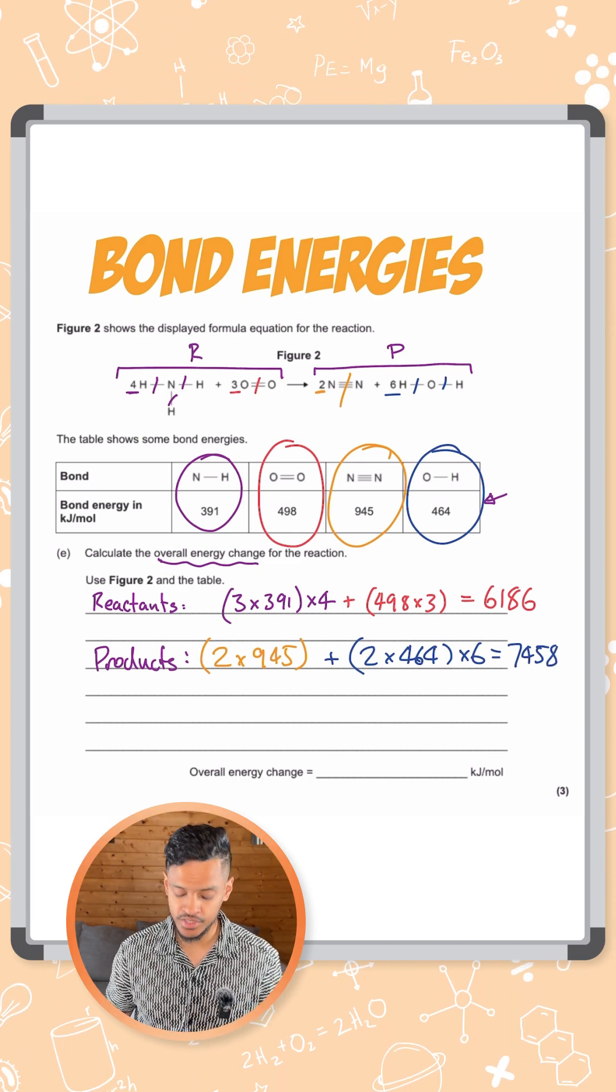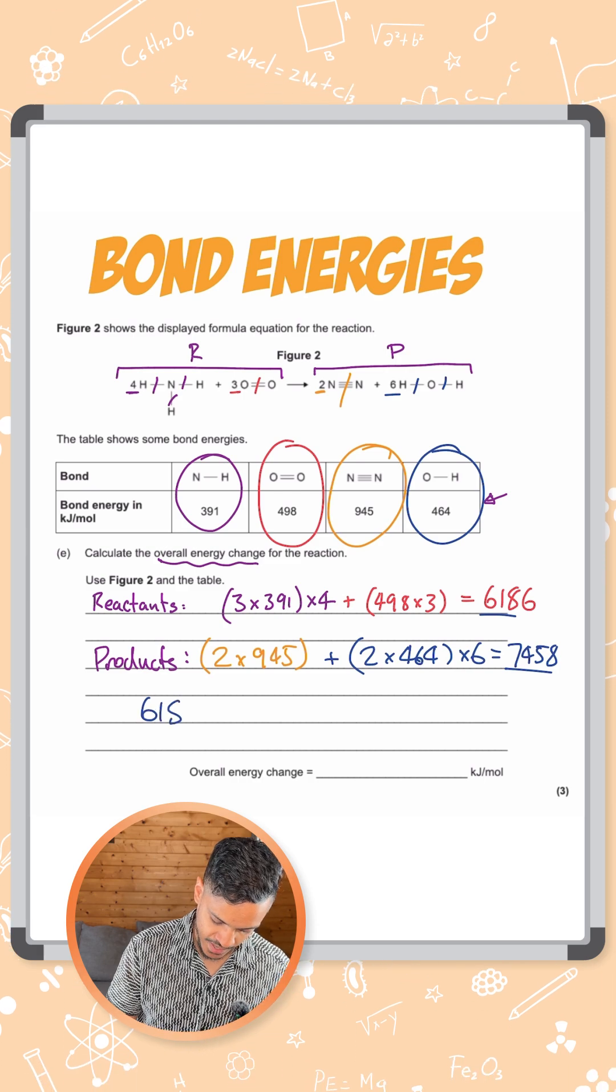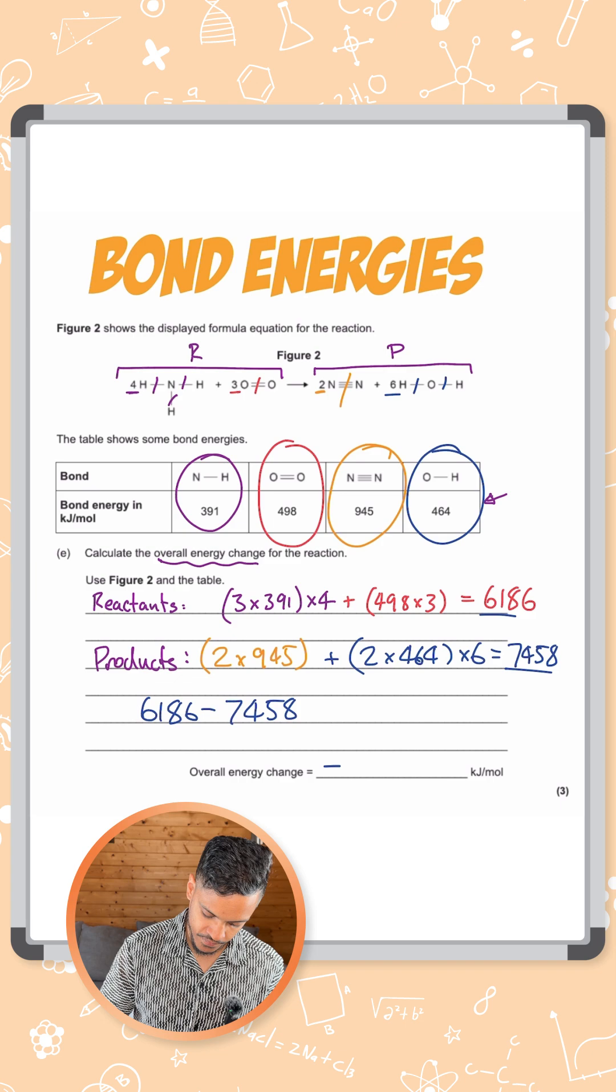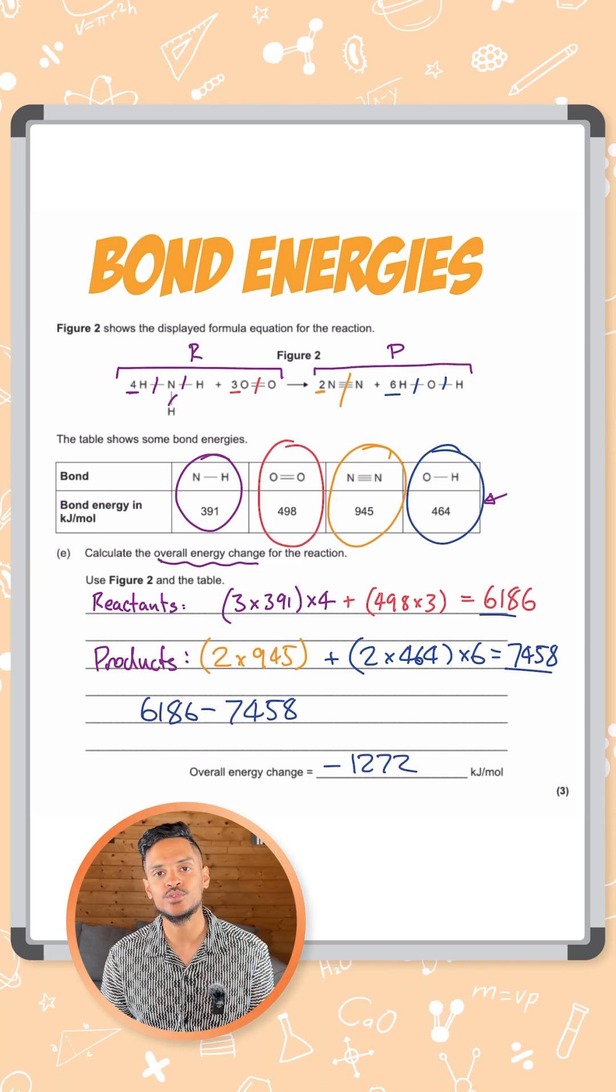Now to get our overall energy change we just subtract these two values. So that's going to be 6186 minus 7458. And that gives a final answer of minus 1272 kilojoules per mole.